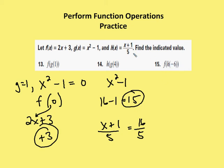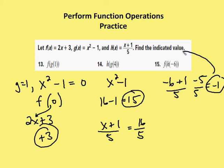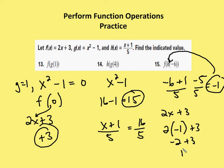Last, I have h of negative 6. So I substitute in negative 6 for x in h of x. I have negative 6 plus 1 over 5, which leaves me with negative 5 over 5, which is equal to negative 1. Now I use this value of negative 1 as the value for x in f of x. f of x is 2x plus 3. I substitute in negative 1 for x — it gives me 2 times negative 1 plus 3, which is negative 2 plus 3, and I end up with positive 1 as my result.